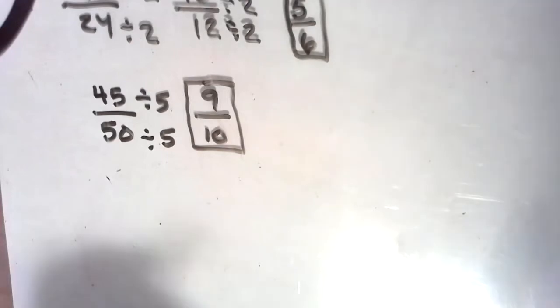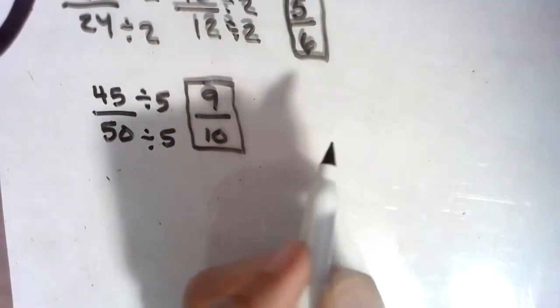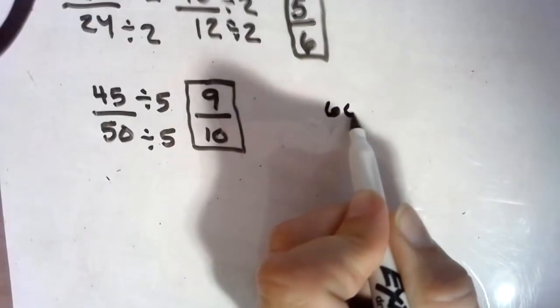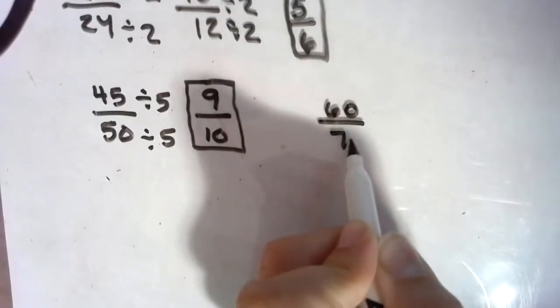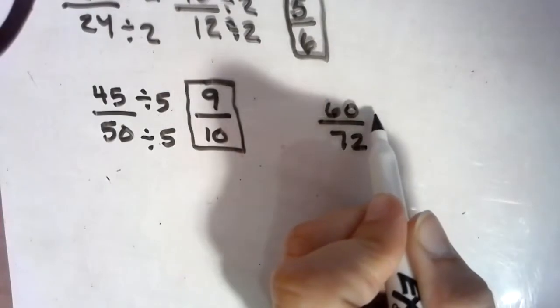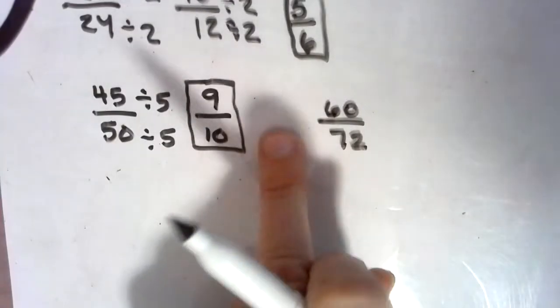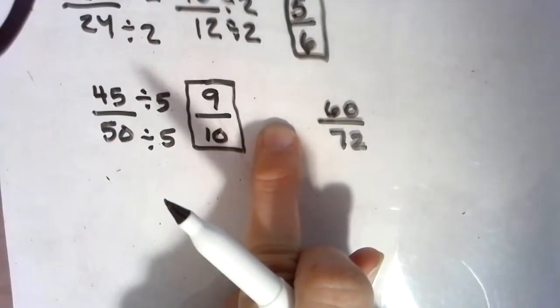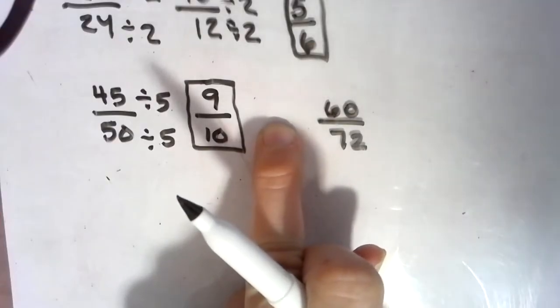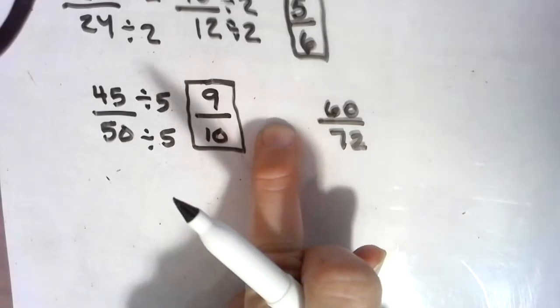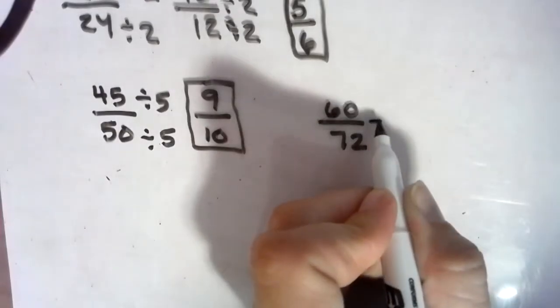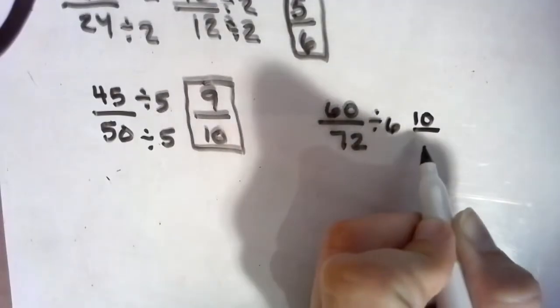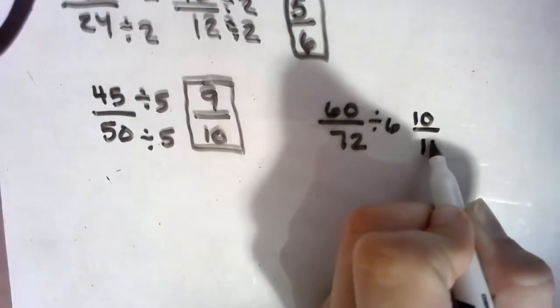All right, so now let's look at this one. So let's say we have 60/72. And then some kids right off the bat see, oh, a 2. Others might see a 3. Well, if you can see a 2 and a 3, then you can see a 6. So we could divide it by 6, and 6 goes into 60 ten times, and 6 goes into 72 twelve times.